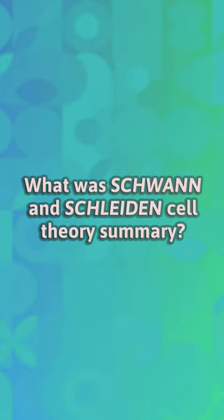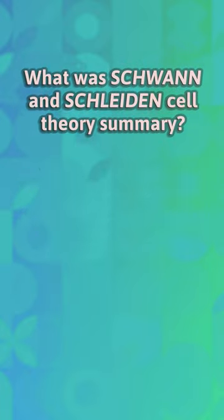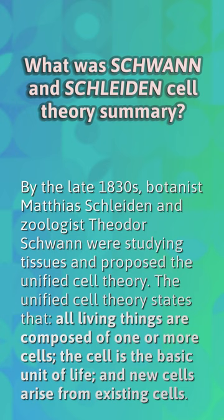What was Schwann and Schleiden's cell theory summary? By the late 1830s, botanist Matthias Schleiden and zoologist Theodor Schwann were studying tissues and proposed the unified cell theory. The unified cell theory states that all living things are composed of one or more cells, the cell is the basic unit of life, and new cells arise from existing cells.